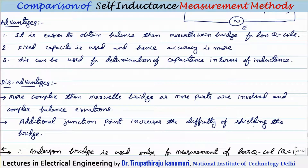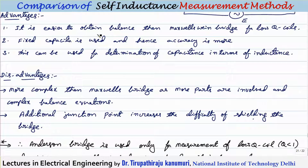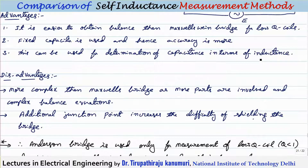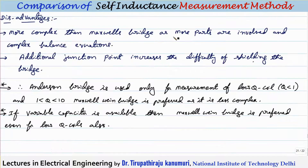In summary: it is easier to obtain balance than with the Maxwell-Wien bridge, particularly for low Q coils, because independent parameters are varied. A fixed capacitor is used giving greater accuracy. It can also be used to determine capacitance in terms of inductance. However, it is more complex with more parts and complex balance equations, and the additional junction point increases shielding difficulty.